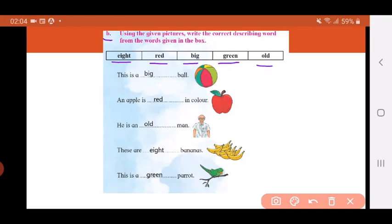Now we will look at the picture, read the sentence and choose the correct describing word. This is a dash ball. Look at the picture. So this is a big ball.